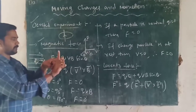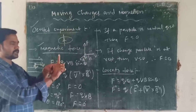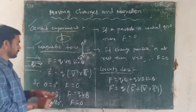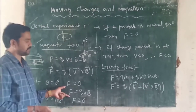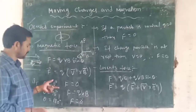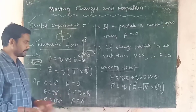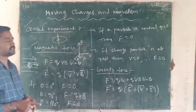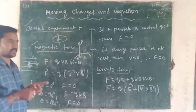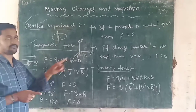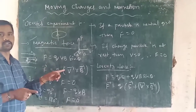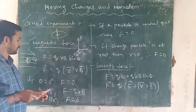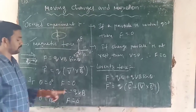When both are perpendicular — charged particle direction and magnetic field are perpendicular — then the force will be maximum. There is no magnetic force when the charged particle and magnetic field are in the same direction or opposite direction. But when both are in the perpendicular direction, the force will be maximum.